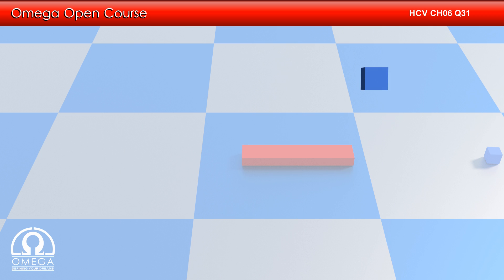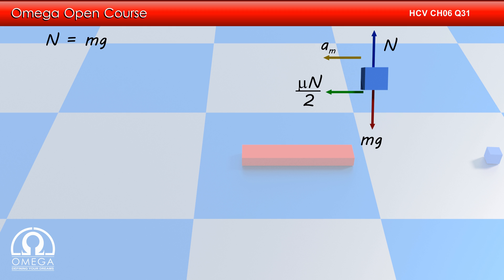Let us draw the free body diagram of the smaller block. Gravitational force mg will act on it in the downward direction. Normal will act on it in the upward direction. Since the coefficient of friction is μ/2, friction force of magnitude μN/2 will act on it in the backward direction. Let the acceleration of this block with respect to the ground be a_m. Balancing forces in vertical direction, we get N = mg. Therefore, m·a_m = μmg/2, or a_m = μg/2.